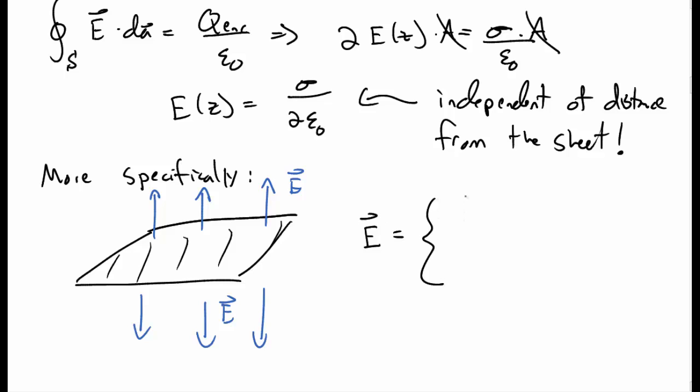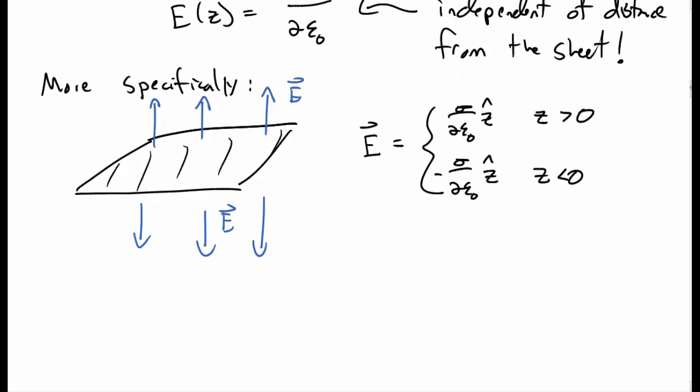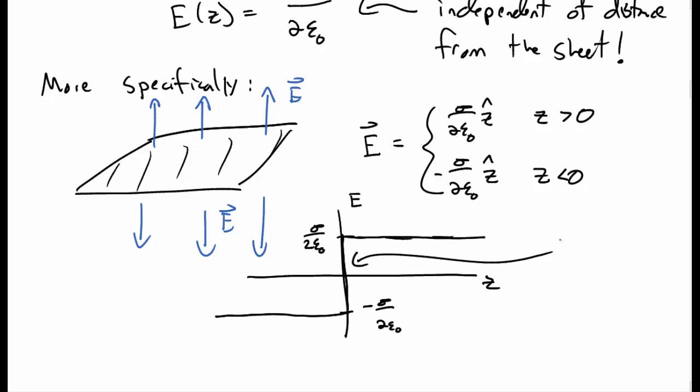We can write that as a piecewise defined function. The electric field is positive sigma over 2 epsilon naught for above the plane, Z greater than 0, and negative sigma over 2 epsilon naught below the plane. Graphically, we can draw a graph of this, of the electric field as a function of Z. And well, so above the plane for Z greater than 0, you have sigma over 2 epsilon naught. And below, you have a minus sign. And notice that there's this discontinuity at Z equal to 0, which corresponds to the surface itself.